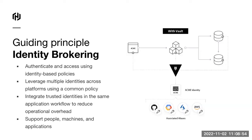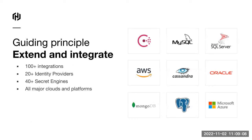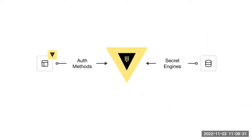A pretty cool concept is identity brokering. Vault has the capability of interacting with the underlying platform running your application. For example, if you're running an application in Kubernetes, Vault has an integration where you can associate your application's service account and use that as a form of identity, linking it to Vault so that the application doesn't even need a username and password to connect to Vault. We have integrations with pretty much all major auth providers and cloud platforms — AWS, Azure, GCP — even on-prem systems.